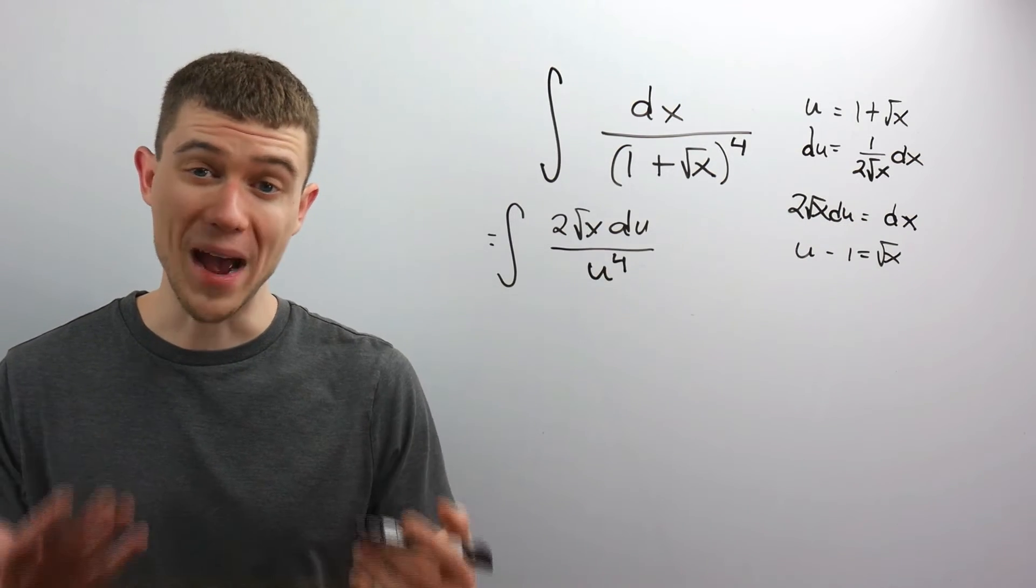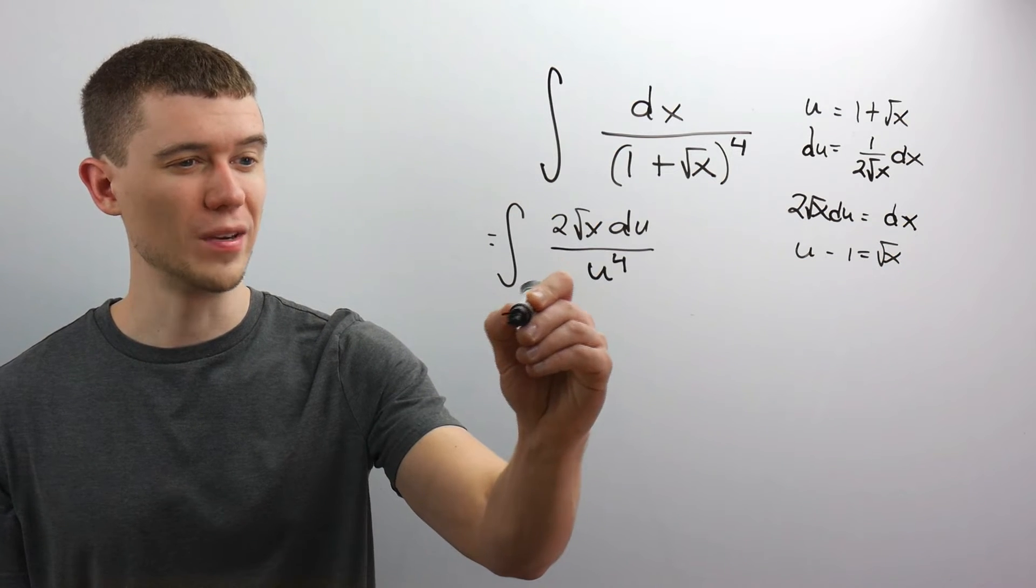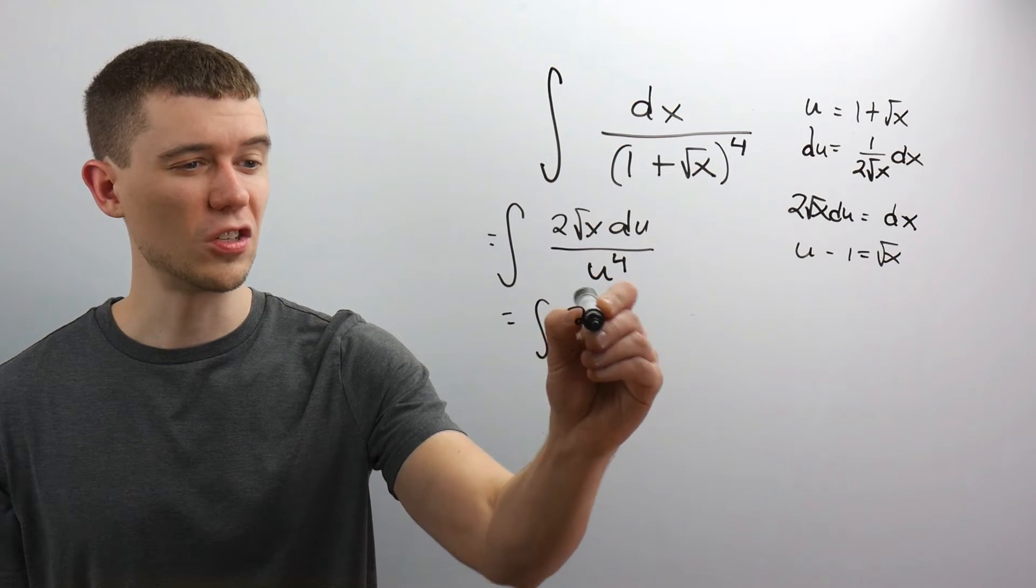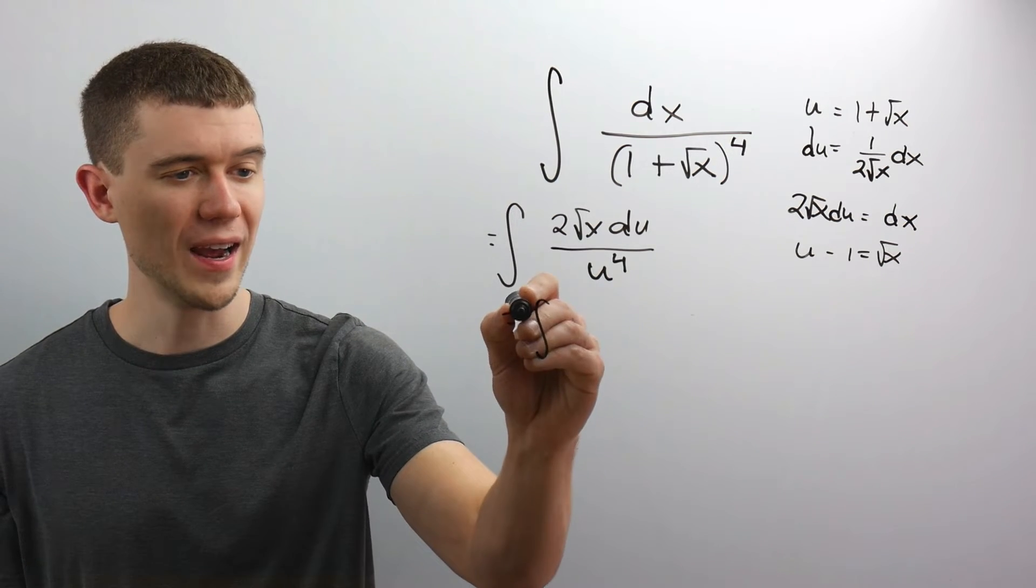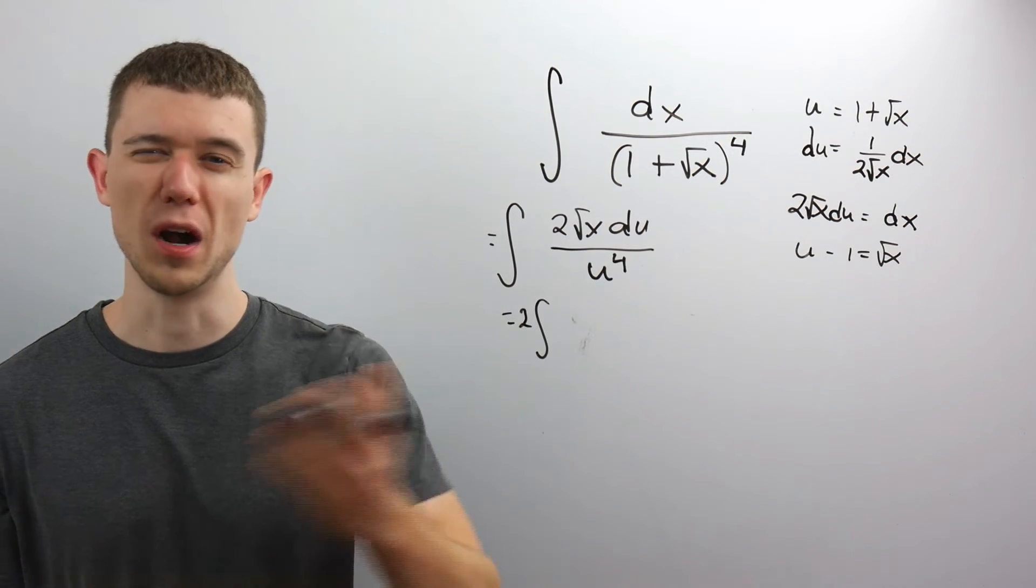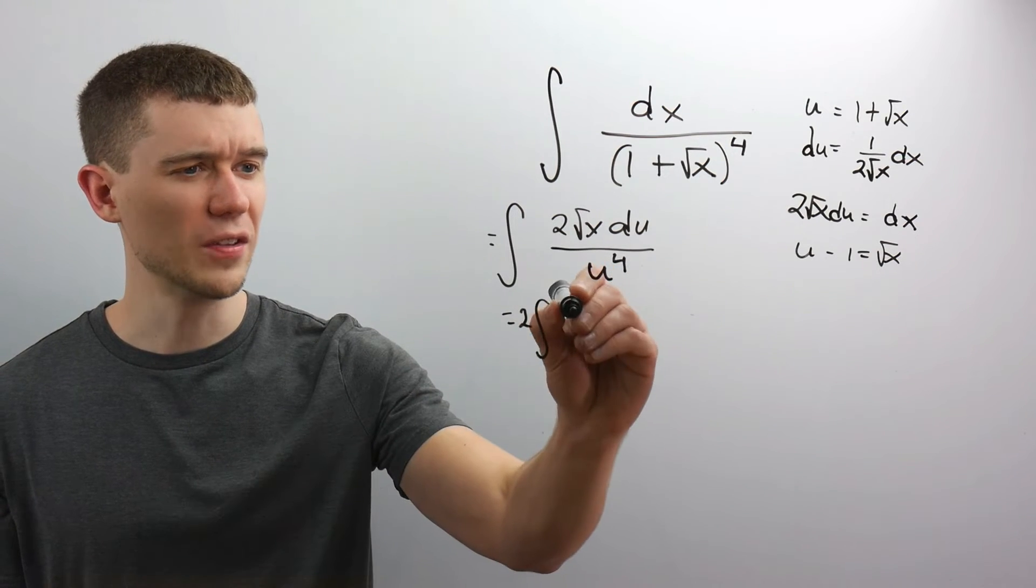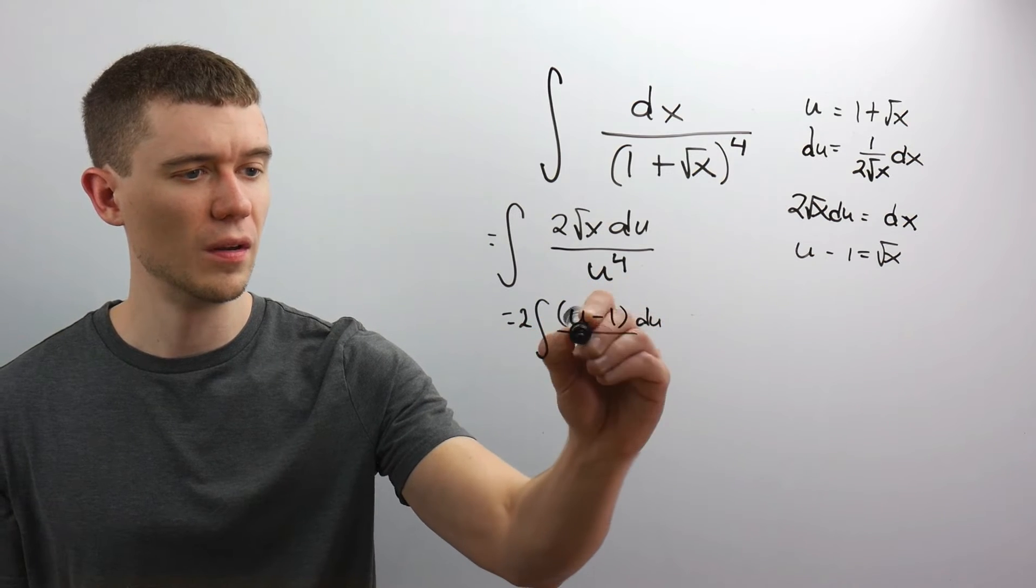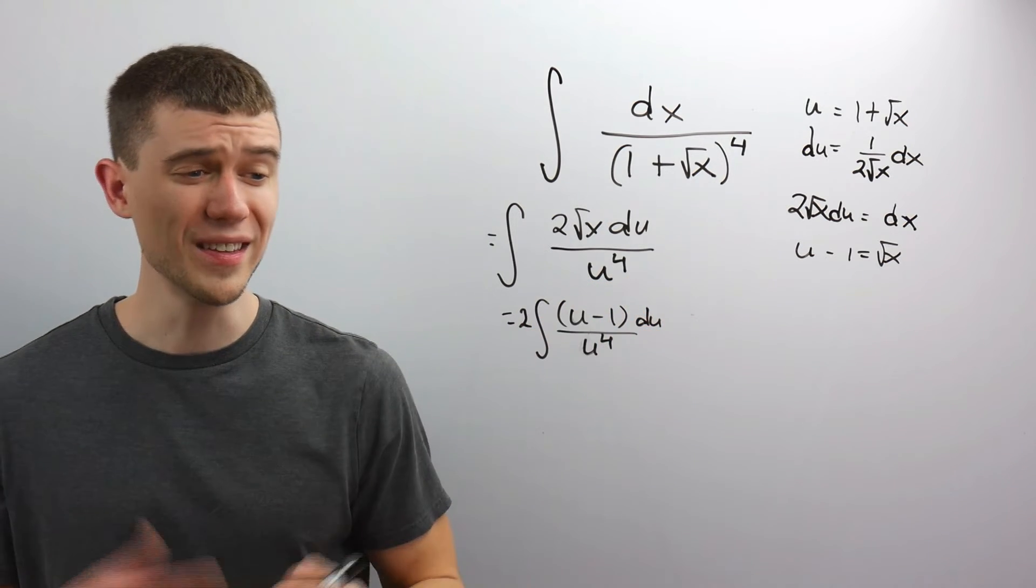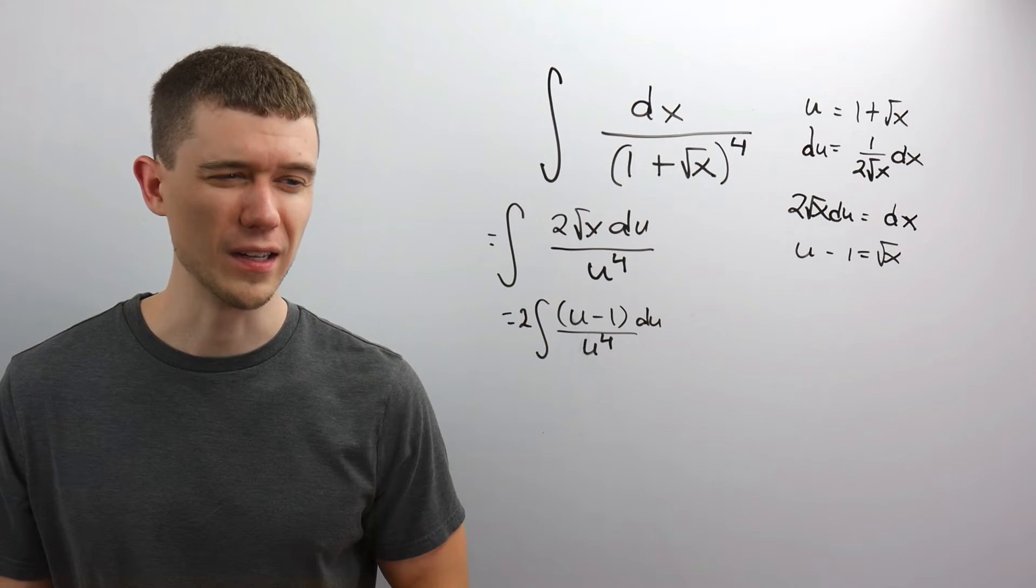Some people call this a back substitution because I look back. And now I'm going to substitute. So I'm going to resubstitute this. It's 2. And if you like, you could even just throw this 2 outside of the integral. I can pull constants out front. Root x, I know what this is now. Now this is u minus 1 times a du over u to the 4th. And this is something much more manageable. We can definitely integrate this.